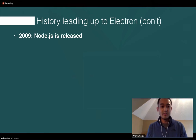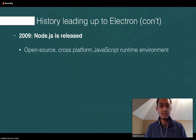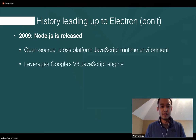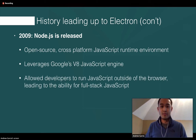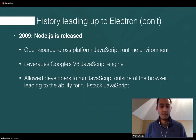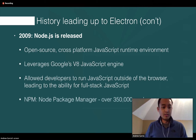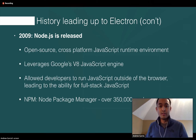V8 added features such as dynamic code optimization at runtime. Then in 2009, Node.js was released. It's also open source — a cross-platform JavaScript runtime environment that leverages Google's V8 JavaScript engine. This allowed developers to run JavaScript outside of the browser, which led to the ability for full-stack JavaScript. Another thing that comes with Node is NPM, which is Node's package manager, including over 350,000 packages with hundreds more coming every week.